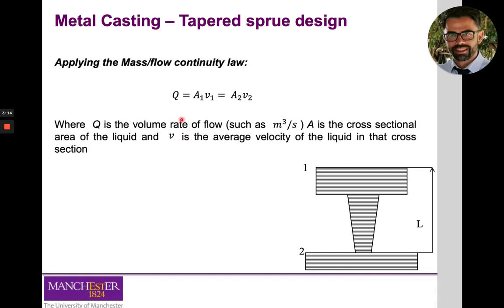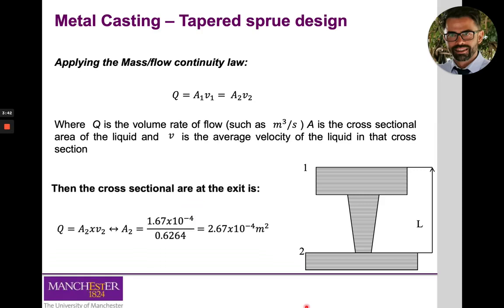The law of mass continuity states that the flow rate is constant and can be calculated at any point, including points 1 and 2, as the cross-sectional area of the sprue at that point multiplied by the velocity at that point. Because we already know the velocity at point 2 and the volume flow rate is constant, we can calculate the cross-sectional area at the exit of the sprue, which must equal 2.67 × 10⁻⁴ metres squared in order to prevent aspiration.